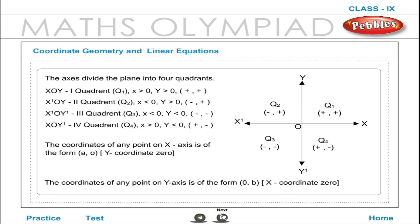The coordinates of any point on the x-axis are of the form (a, 0), i.e. the y-coordinate is 0. The coordinates of any point on the y-axis are of the form (0, b), i.e. the x-coordinate is 0.